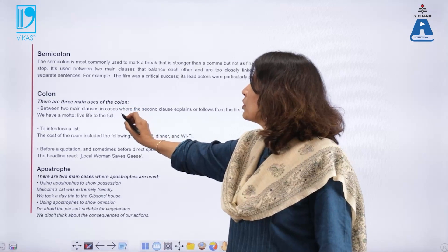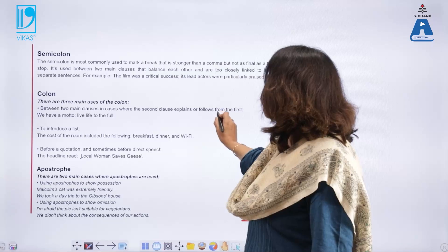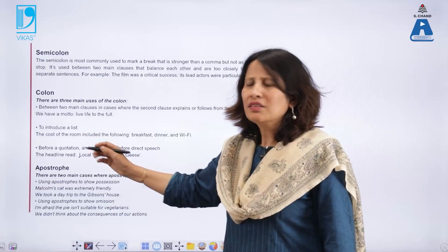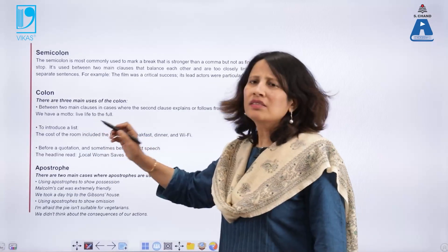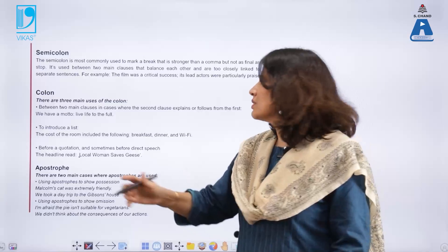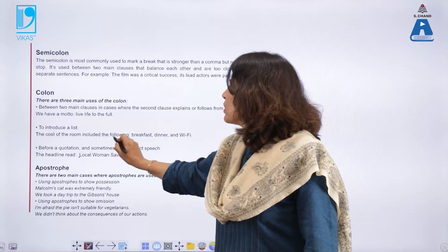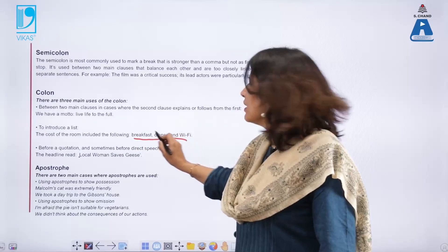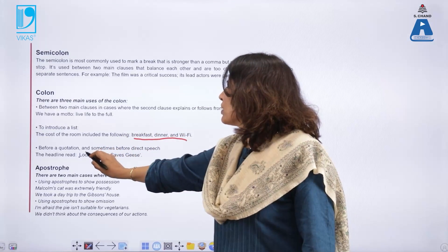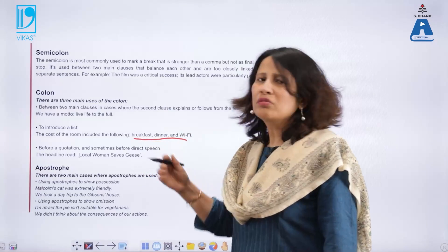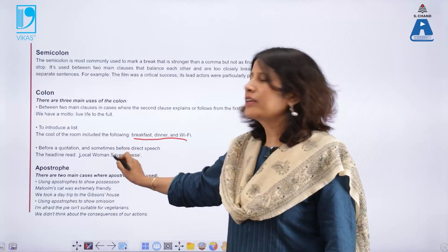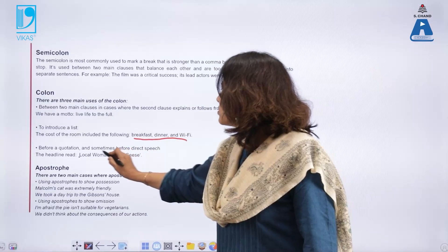There are three main uses of the colon. First, between two main clauses where the second clause explains or follows from the first — for example: 'Live life to the full.' Second, to introduce a list — for example: 'The cost of the room included the following: breakfast, dinner, and wi-fi.' Third, before a quotation or direct speech — for example: 'The headline read: Local woman saves geese.'